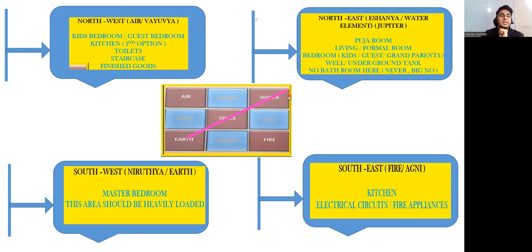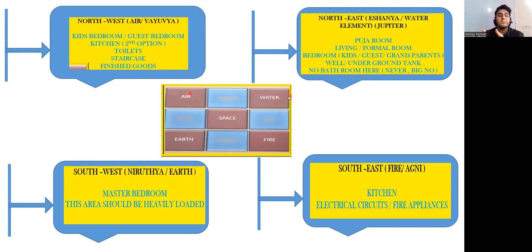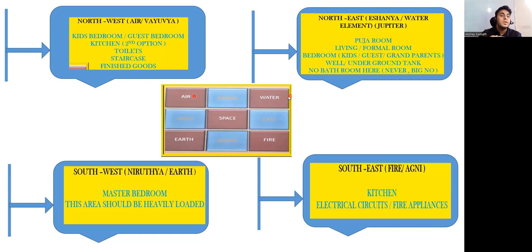Northwest — called Vayuvya — has the air element. Whichever element is in movement, we keep it there. We put kids' bedrooms in the Northwest because we don't want children to stay home for a long period — we want them to go for higher studies. The air element pushes them out. Similarly, the guest bedroom goes in the Northwest because we don't want guests to stay for a very long period of time — the air element makes them leave quickly.